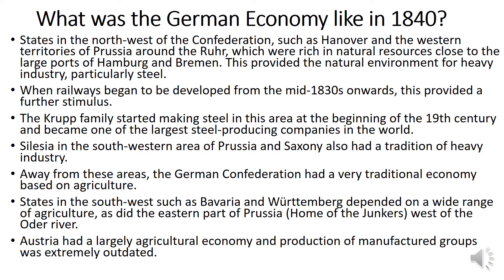Austria had a largely agricultural economy and its production of manufactured goods was extremely outdated. Some areas of Bavaria and Austria produced artisan goods — things like pottery and clockmaking — items that took a long time and were done by hand. In this new era of mass production, these states simply couldn't keep up with having workers produce goods by hand.